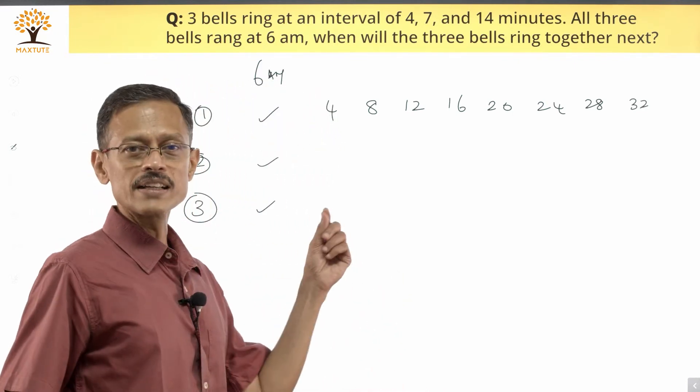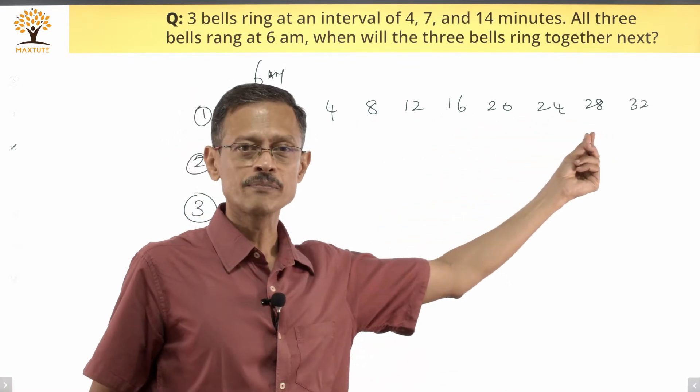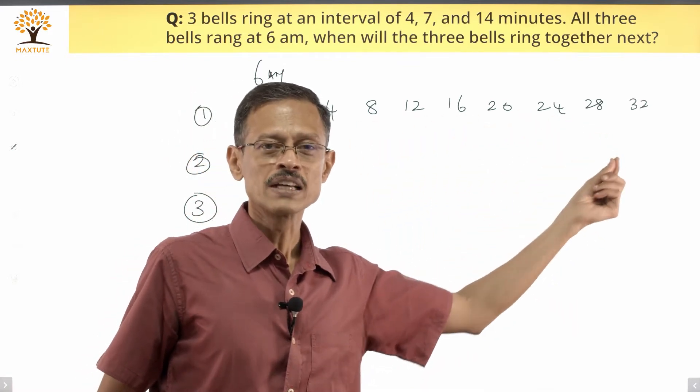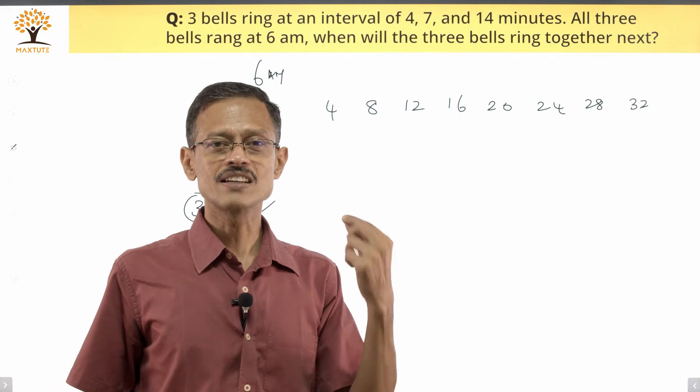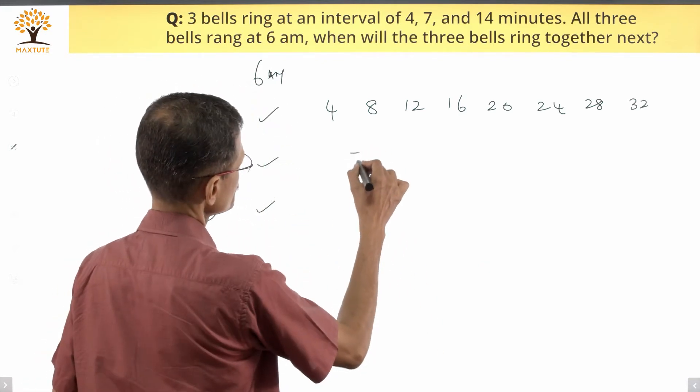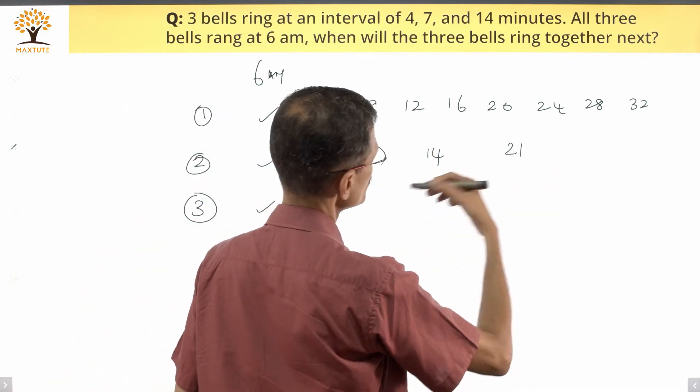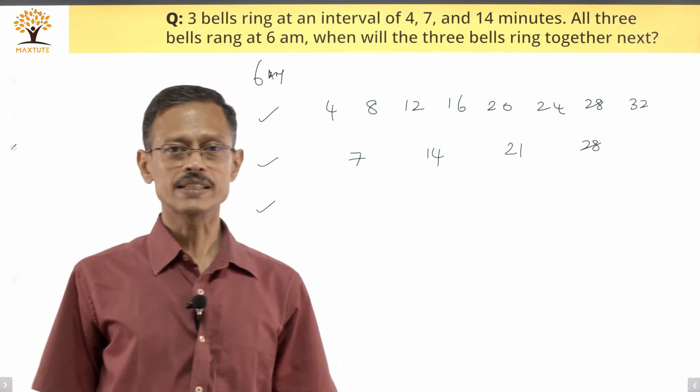Let's look at the second one. It's going to ring every seventh minute. So now that we know that if it rings every fourth minute, it's going to ring at multiples of four, if the second bell is going to ring every seventh minute, it's going to be ringing at multiples of seven. So 6:07, 6:14, no they're not ringing together, 6:21, no, 6:28. These two bells seem to be ringing together.